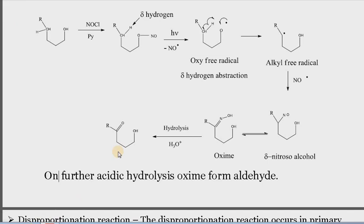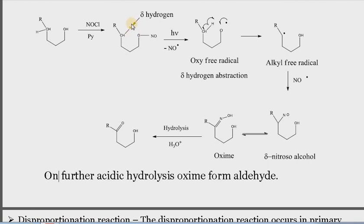So what overall change takes place during this reaction? You can compare the reactant with the product. In this alkyl nitrite, we have hydrogen at the delta position — alpha, beta, gamma, and delta. In the product, we have one NO group at the same position. This nitroso gets converted into the oxime. So overall, during the Barton reaction, this delta hydrogen is substituted by the NOH group.